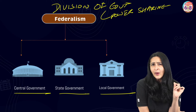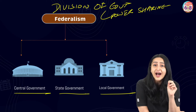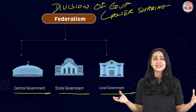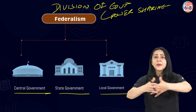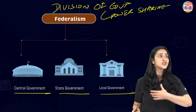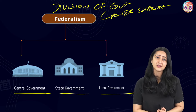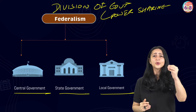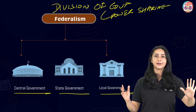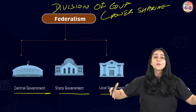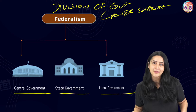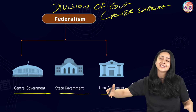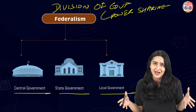Why did the constitution makers divide power among the three tiers of government? Because in a country as vast as India, with so many different states and diverse communities with different beliefs, it is very important for power not to be concentrated in just one person sitting in the capital. Provisions were made so that different levels of government can take decisions for people across the states, and thereby the whole country can be governed correctly.